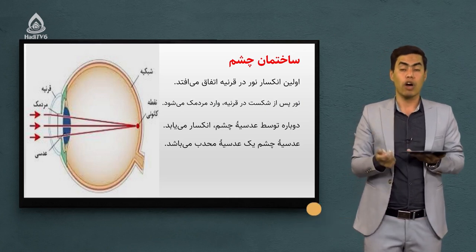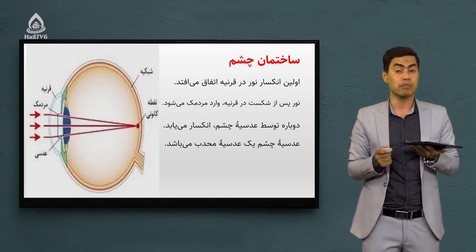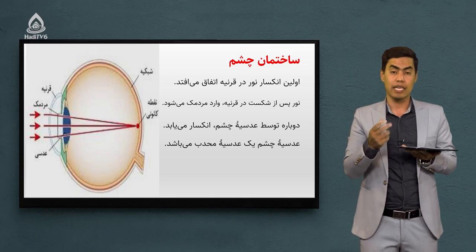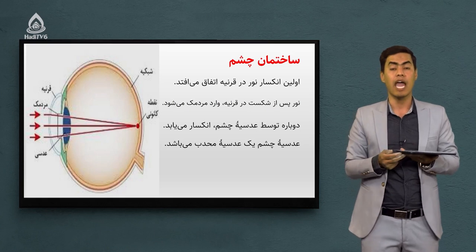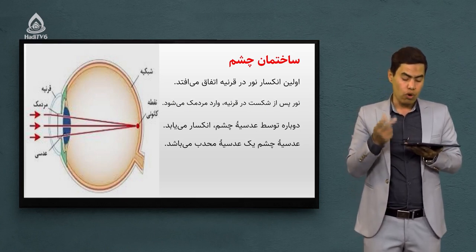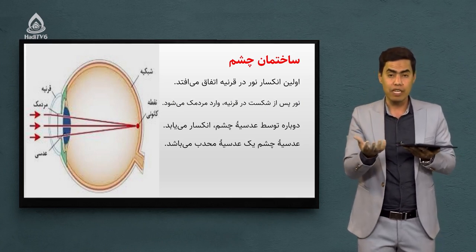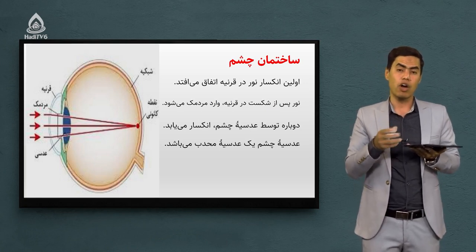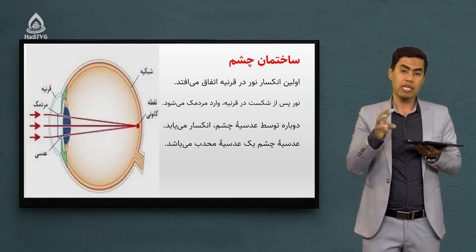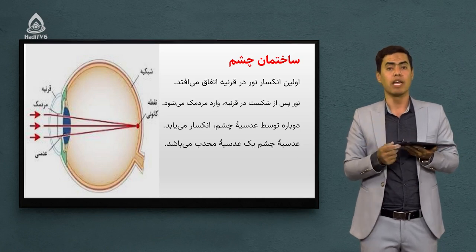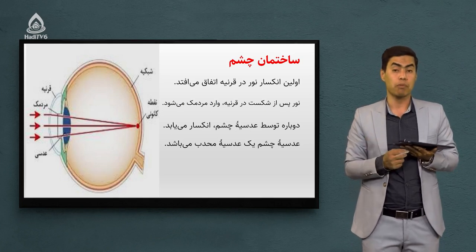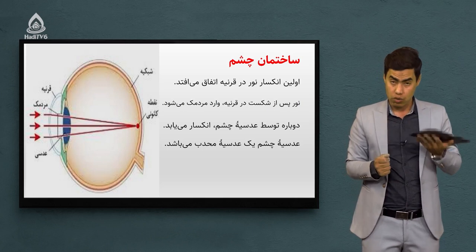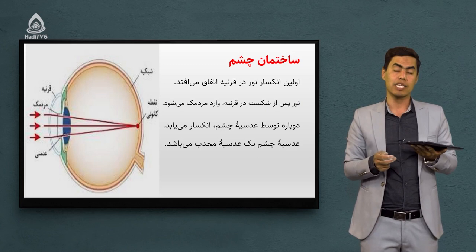مردمک چشم وظیفه‌اش اینه که در روشنایی این مردمک چشم باریک‌تر می‌شه تا از عبور نور زیاد به چشم جلوگیری کنه، و در تاریکی شب این مردمک چشم بازتر می‌شه تا نور بیشتر وارد چشم انسان شه. مردمک نور را هدایت می‌ده به سمت عدسیه چشم. عدسیه چشم نور انکسار می‌ده - پس دومین شکست و انکسار نور در عدسیه چشم اتفاق می‌فته. عدسیه چشم هم از نوع عدسیه محدبه. در چشم انسان دو شکست یا انکسار نور اتفاق می‌فته: اولش در قرنیه و دومش در عدسیه چشم.